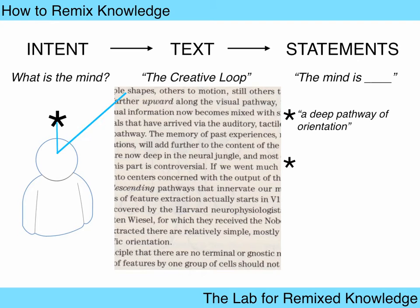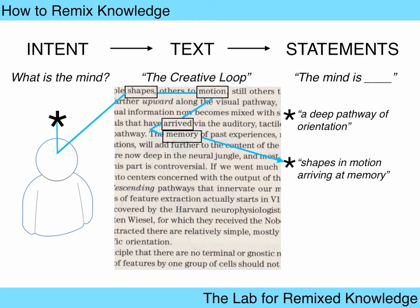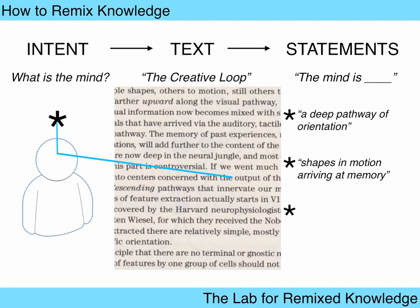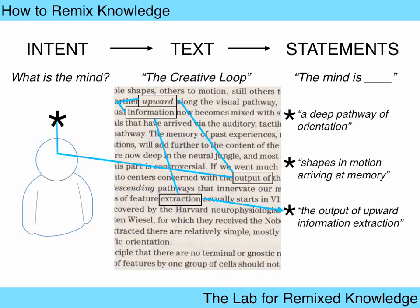What is the mind? The mind is shapes in motion arriving at memory. You can change the form of the words that are there — they're your material to sample and change as you see fit. Let's create another one: the mind is the output of upward information extraction.